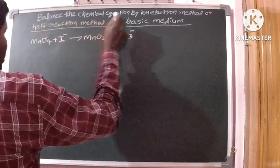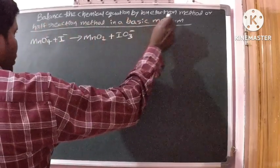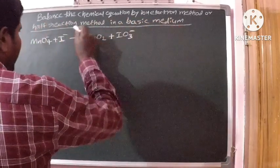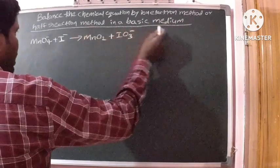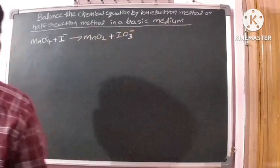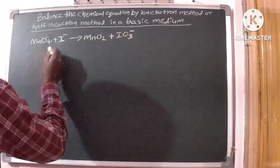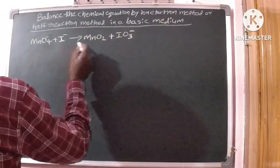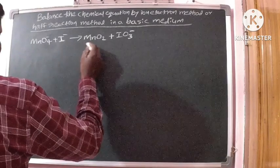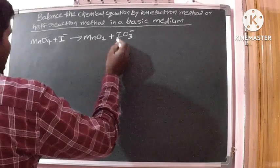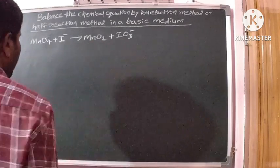Balance the chemical equation by the ion-electron method, or half-reaction method, in a basic medium. The reaction is: permanganate ion plus iodide ion gives manganese dioxide plus iodate ion.